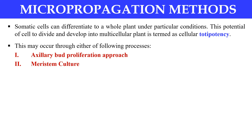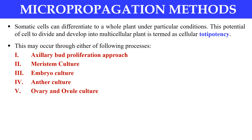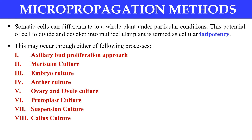We can also take meristem for micropropagation. Next, embryo culture — we can perform micropropagation using embryos. Anther culture is also a method of micropropagation. All cultures that can be started from small parts come under micropropagation methods: anther culture, ovary and ovule culture, protoplast culture, and suspension culture can all be used for micropropagation. And finally, callus culture — in which we just want to develop callus — can also be done by micropropagation methods.